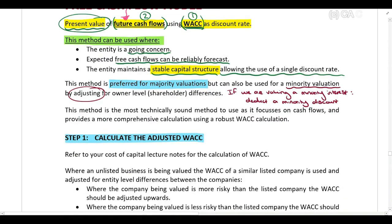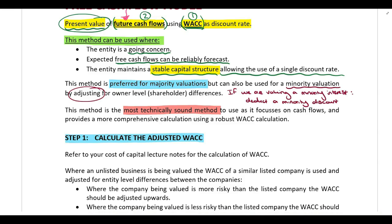Please also note that this method is the most technically sound method — the best method we can use to value a company — because we are not looking at past earnings but instead calculating value based on the cash flows we expect the company to have in the future. Obviously one limitation of this method is that there is a lot of subjectivity when it comes to forecasting those future cash flows.